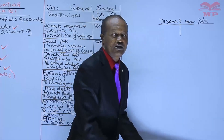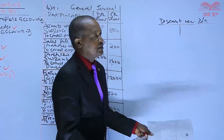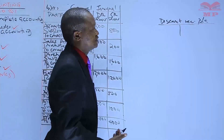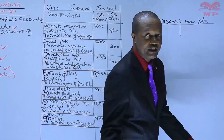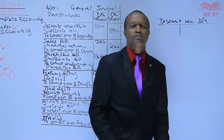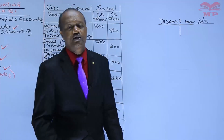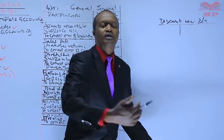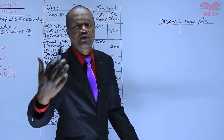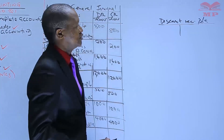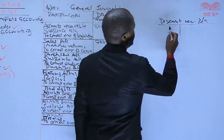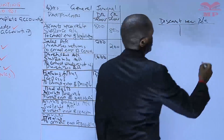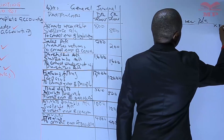When you receive an income like commission by check, the bank account is debited and the commission received account is credited. So when you receive a discount, the discount account will be credited.